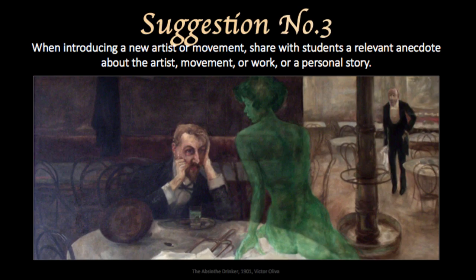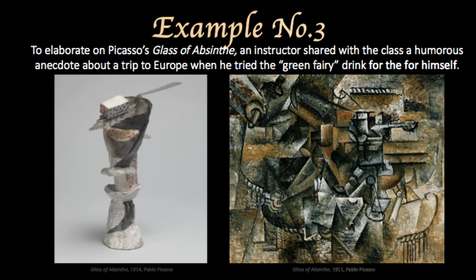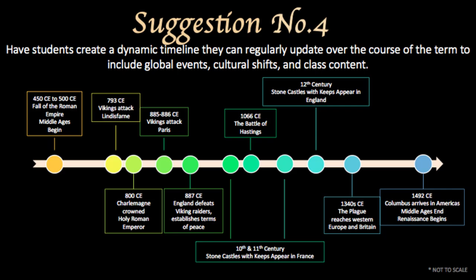Suggestion number three: when introducing a new artist or movement, share with students a relevant anecdote about the artist, movement, or work, or a personal story. For example, when studying Art Nouveau, it's hard to miss the prevalence of the green fairy that pops up over and over again. This green fairy, better known as absinthe, was a highly popular drink amongst Parisian artists during the second half of the 19th and the beginning of the 20th century, and it was known for having creativity-inspiring properties. To elaborate on Picasso's glass of absinthe, an instructor shared with the class a humorous anecdote about a trip to Europe when he tried the green fairy drink for himself and explained the ritual of how it was prepared.